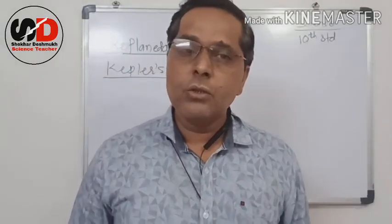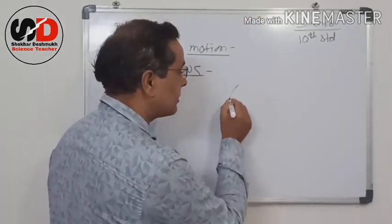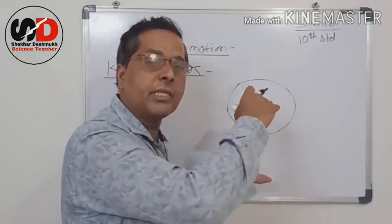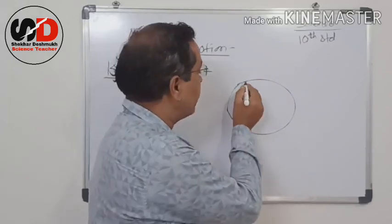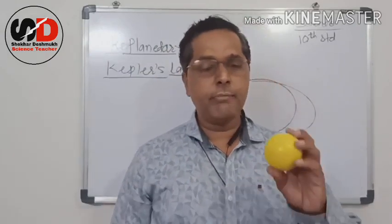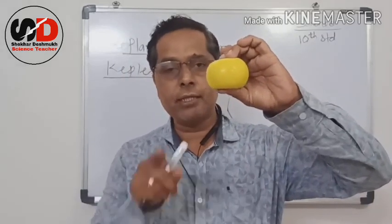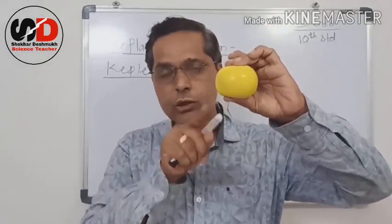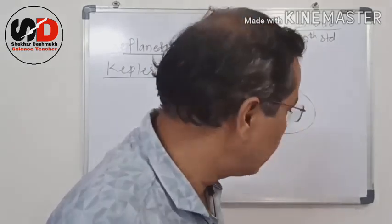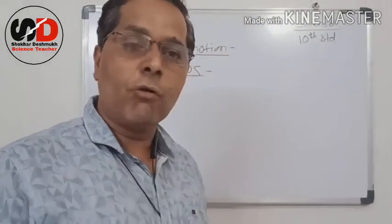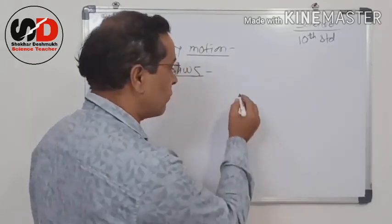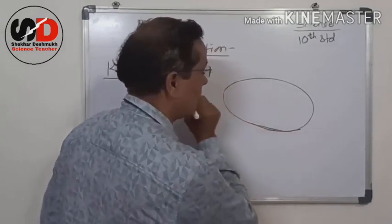What is an ellipse? Suppose this is a circle — if I apply pressure on it from two sides, it becomes flat. This flattened circle is nothing but an ellipse. I have a ball in my hand; if I apply pressure on it, the shape of the ball changes and it becomes elliptical. So the orbit of the planet according to Kepler is elliptical, and the Sun is present at one of the foci. Foci is the plural form of focus.